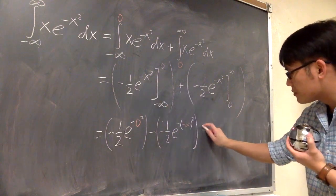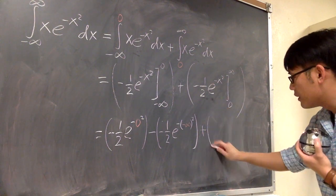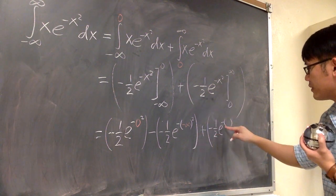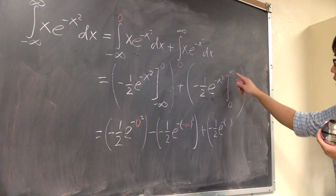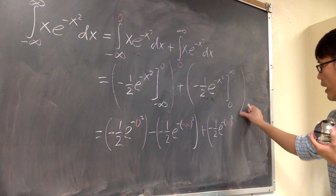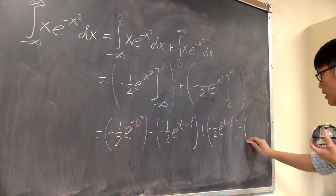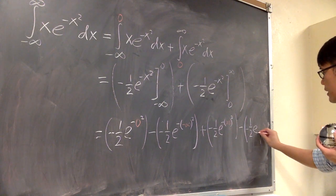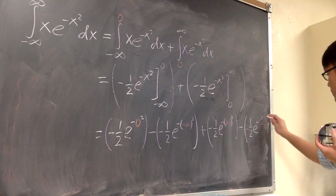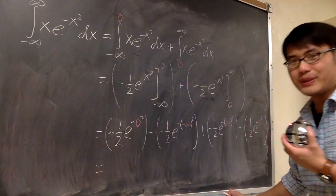Now for the second part: I plug in infinity into x first, giving negative one-half times e to the negative infinity squared. Then subtract the result of plugging in zero: negative one-half times e to the negative zero squared. That's the complete setup — not too easy, not too hard.